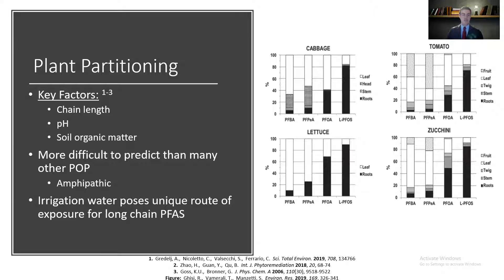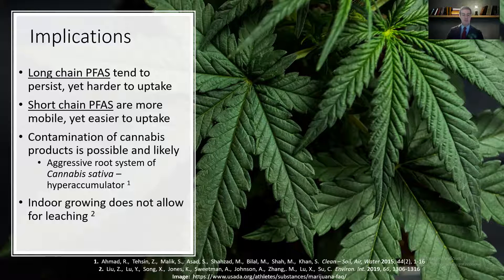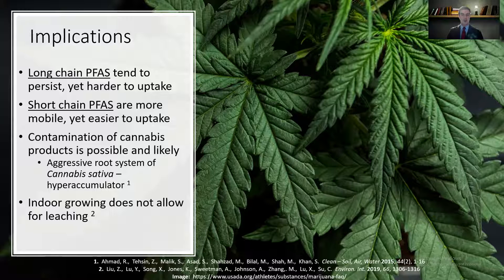Chain length is actually the most important factor when considering plant partitioning of PFAS, followed by pH and soil organic matter. Long-chain PFAS are much more persistent in the environment and do not move around as much, but they're harder to uptake. Short-chain PFAS are easier to uptake into plants, but the silver lining is they're more mobile — except when grown indoors, which a lot of cannabis is. In the environment, short-chain PFAS can leach away from plants during the growing season, but when growing indoors in a pot, they have nowhere to go. So short-chain PFAS do accumulate in those pots and become more bioavailable to the plant.